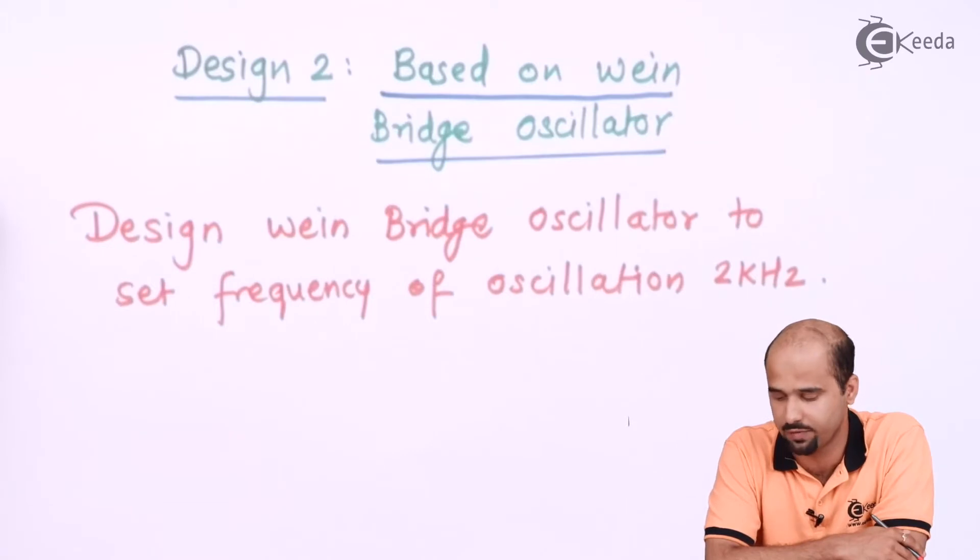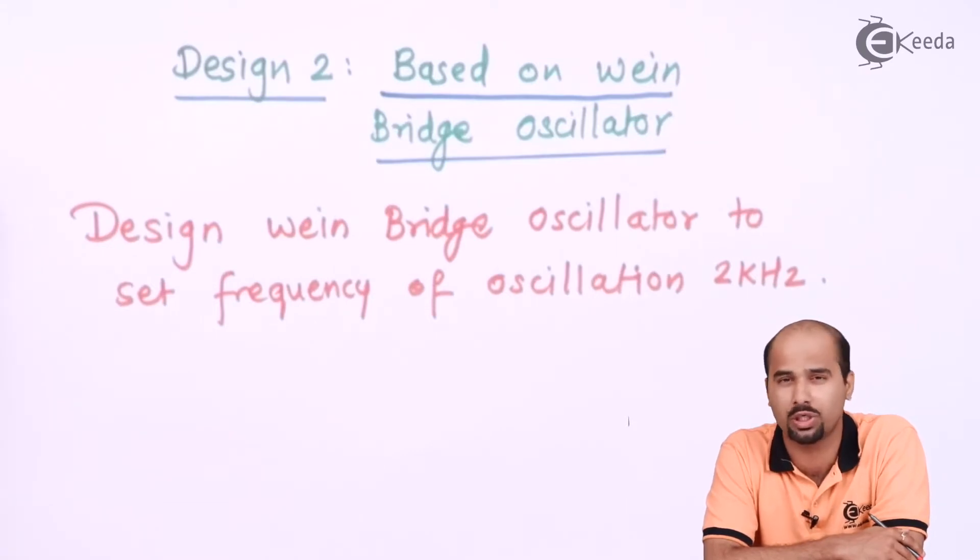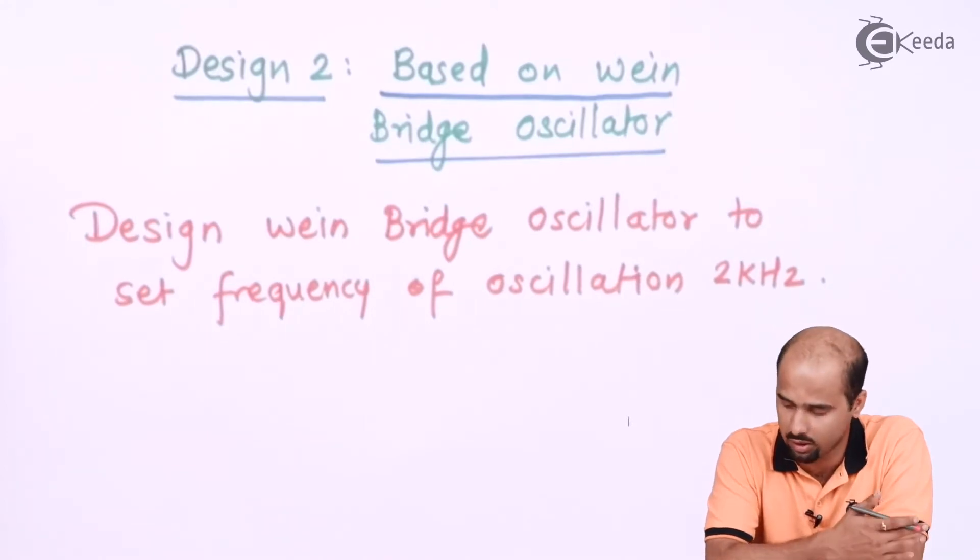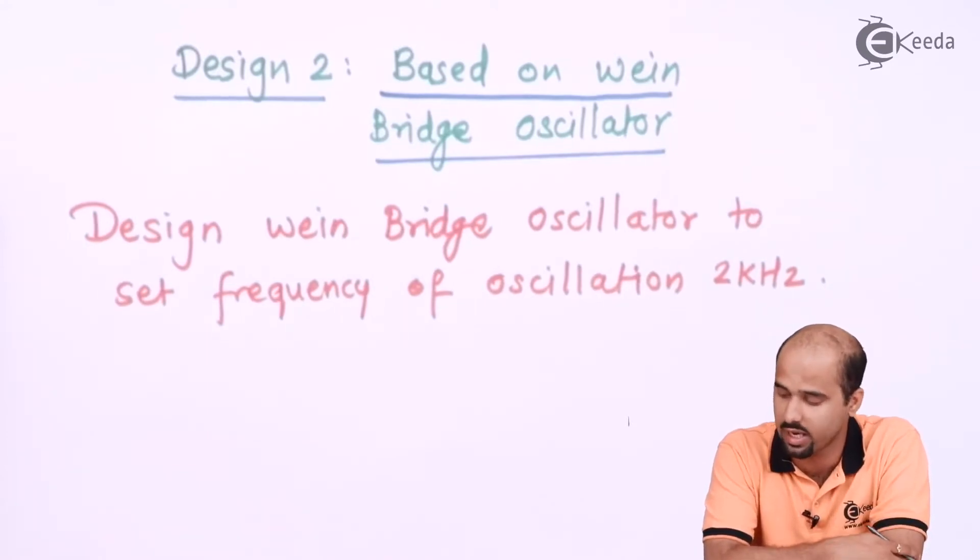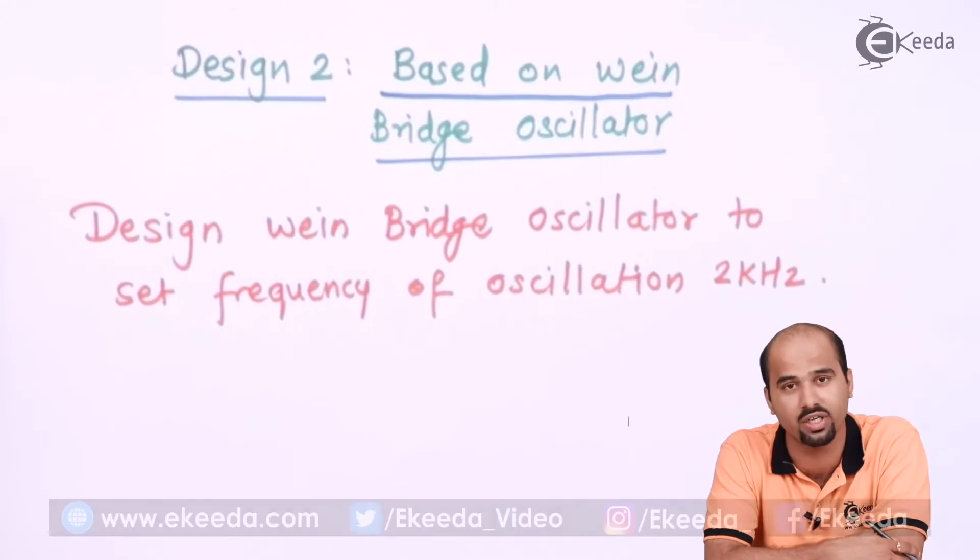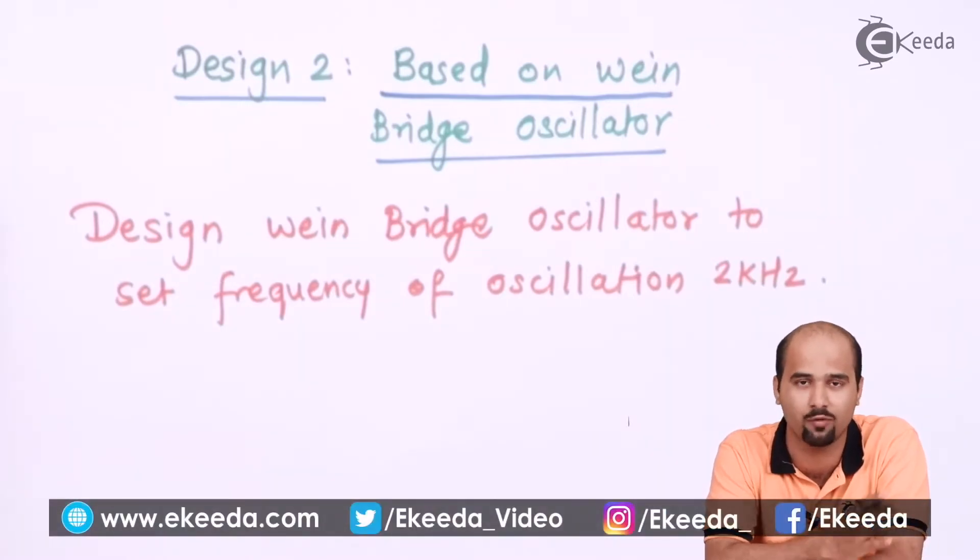So as they have mentioned two kilohertz, they can say design the oscillator with the frequency of two kilohertz. So you have to mention that if two kilohertz is there, it's nothing but less than 10 kilohertz, so either you have to use RC phase shift oscillator or Wien bridge oscillator.